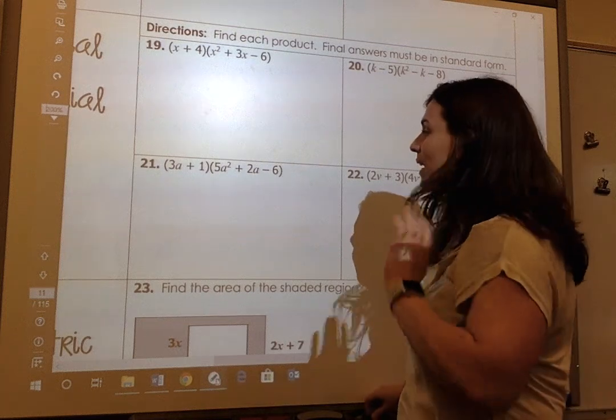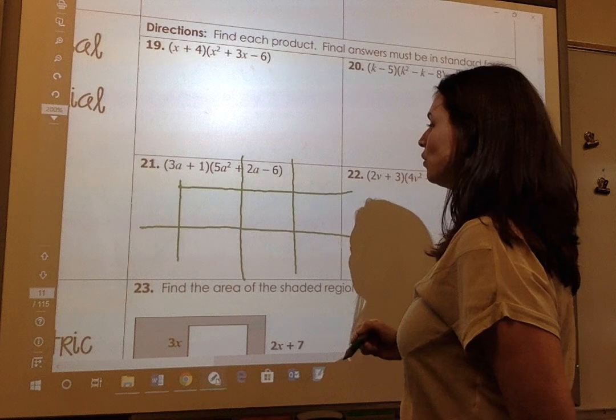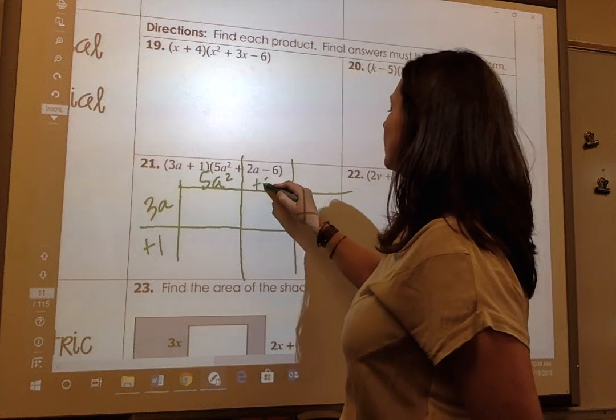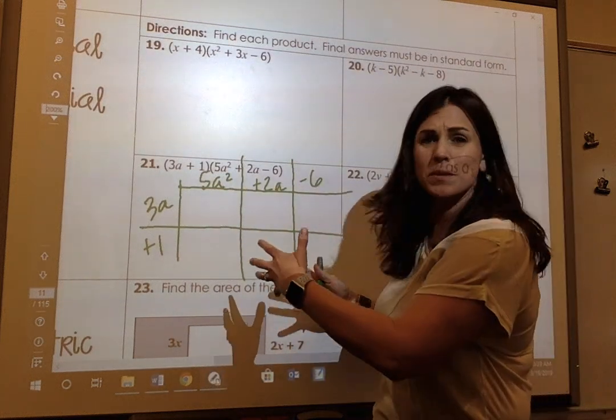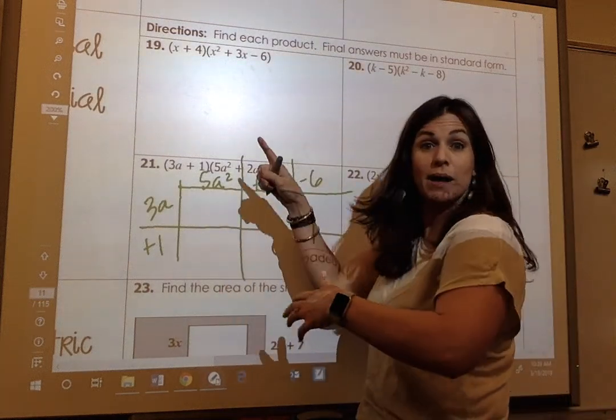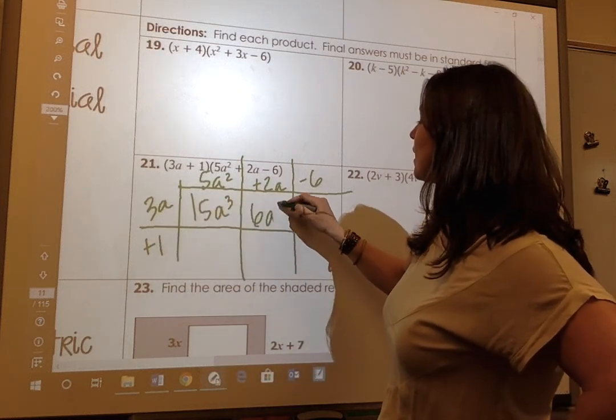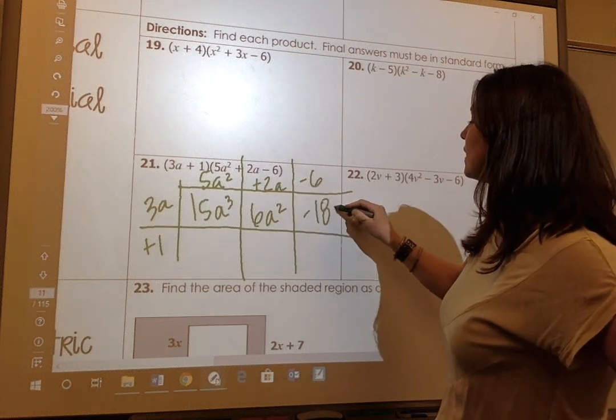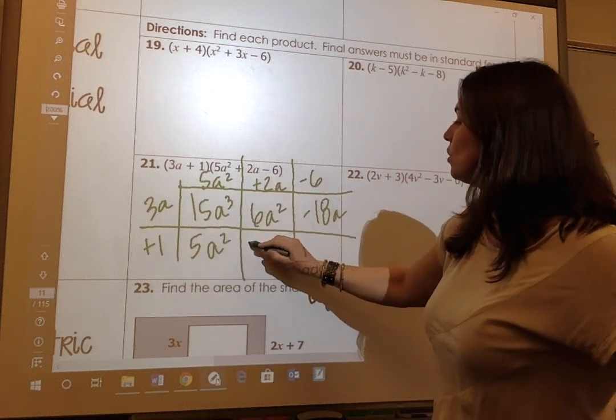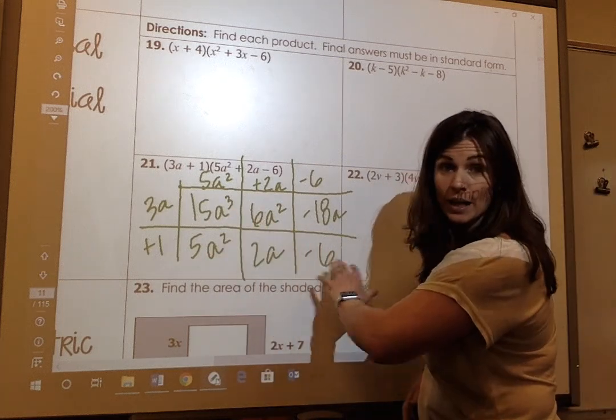I would probably do a box method. And here you would do a 3 by 2 box. So here could be 3a plus 1. And here would be 5a squared plus 2a and a negative 6. And this keeps me organized. So that's why I tend to go to the box method just because everything is in a box and I can check it off. So 3a times 5a is 15a cubed. 3a times 2a is 6a squared. 3a times negative 6 is negative 18a. 1 times 5a squared is 5a squared. 1 times 2a is 2a. And 1 times negative 6 is negative 6.